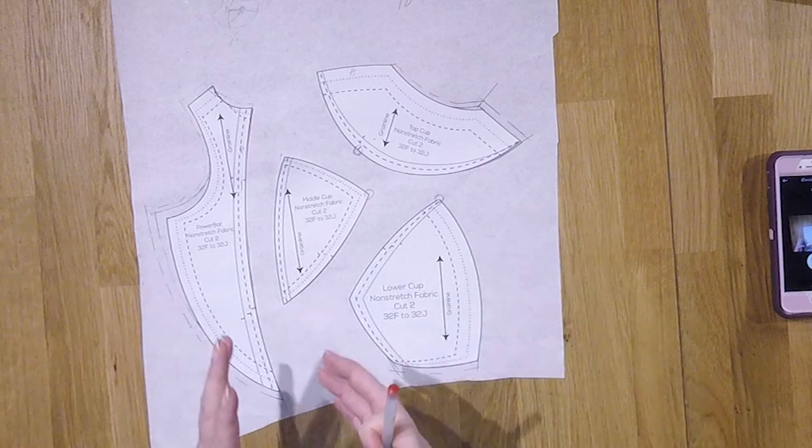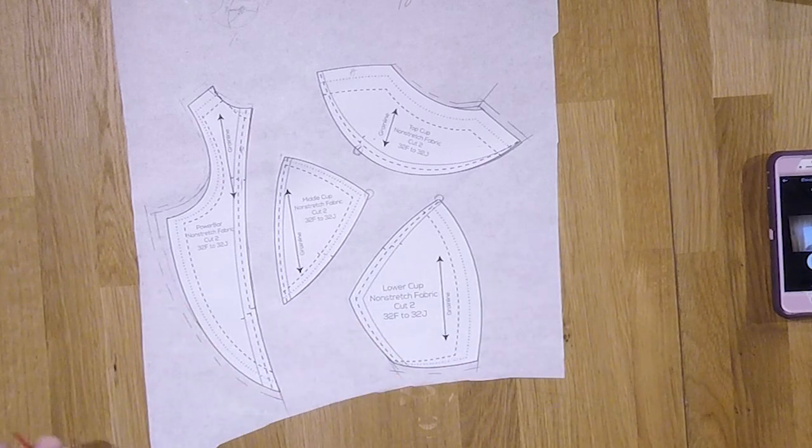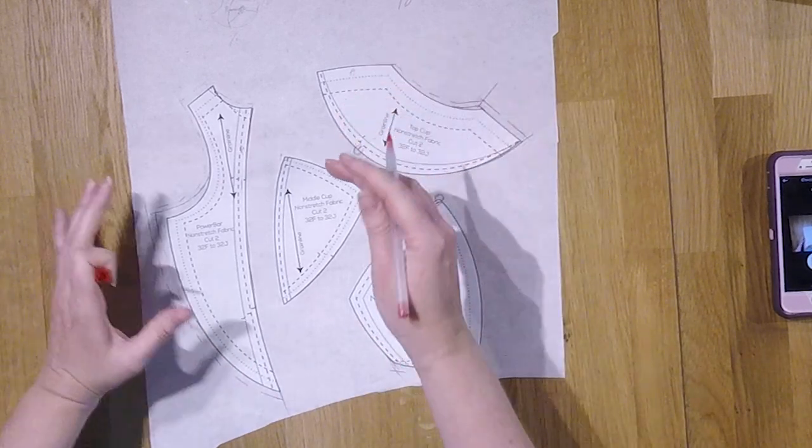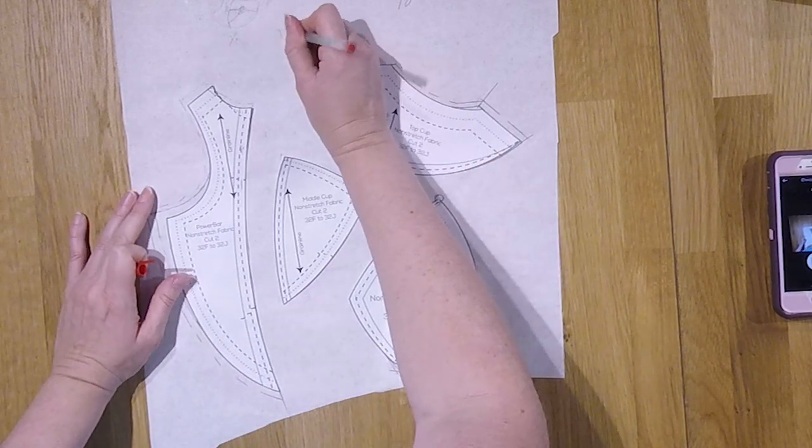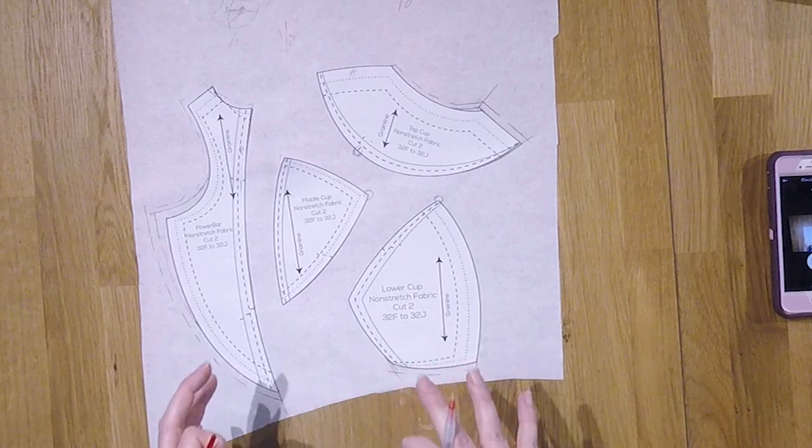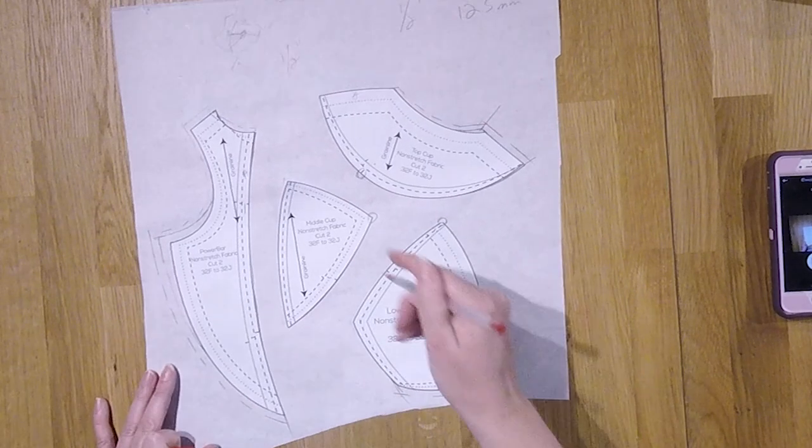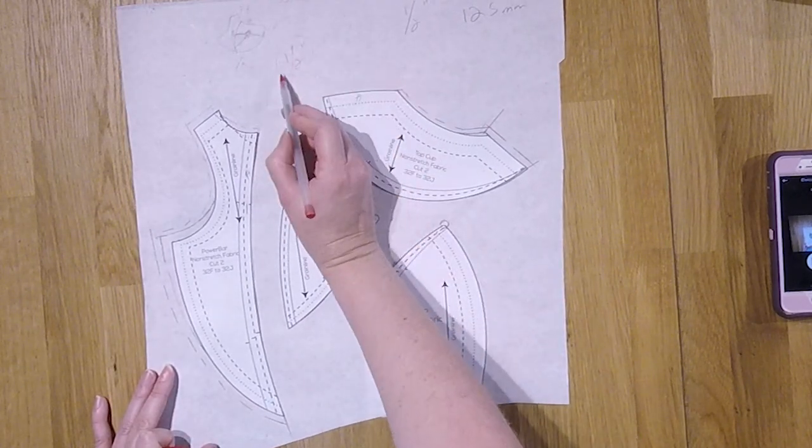Now in case you actually need to, let's say, take this cup and grade it for a smaller wire. Let's just say that you've measured both of your wires and one wire is a half an inch smaller.